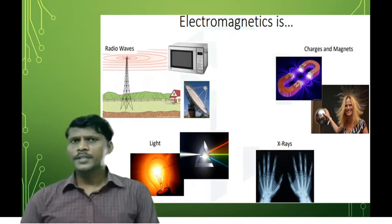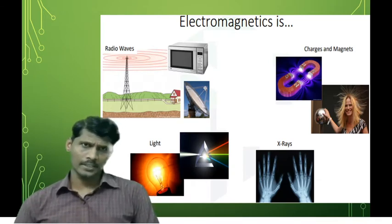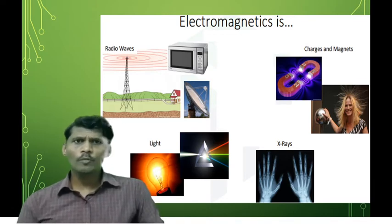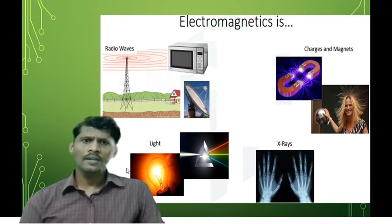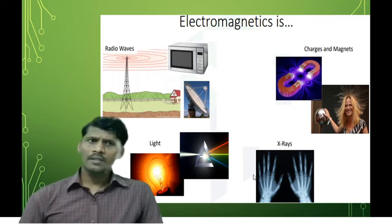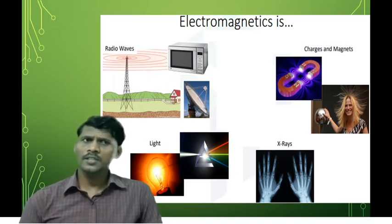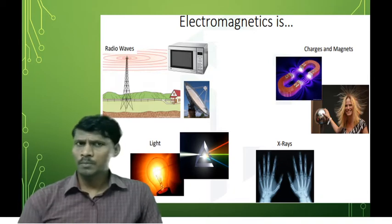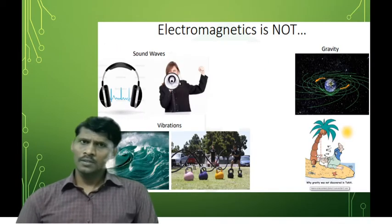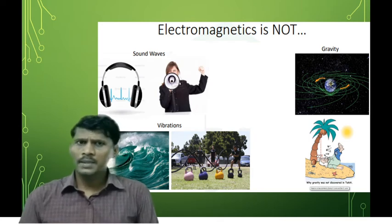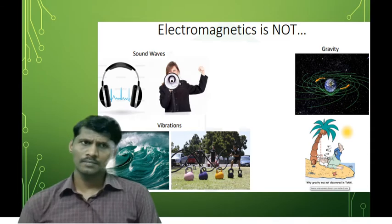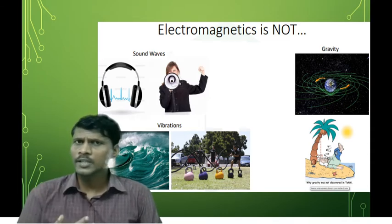That is a brief introduction to electromagnetics. Radio waves, light rays, and X-rays are electromagnetics. Charges and magnets are electromagnetics. Sound waves are not electromagnetics. Vibrations are not electromagnetics. Gravity is not electromagnetic.